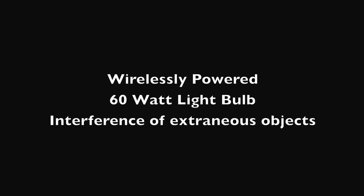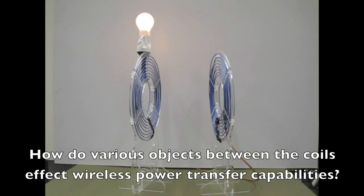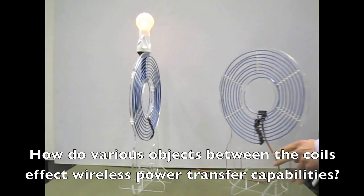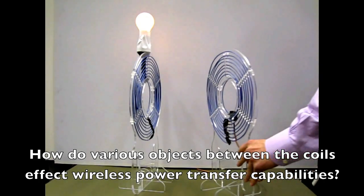In these videos, we will wirelessly power a 60 watt light bulb. In this demonstration, we investigate the effects of various objects physically interfering with the coils.